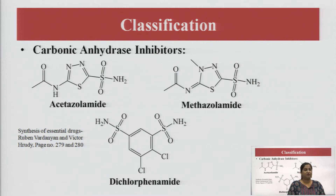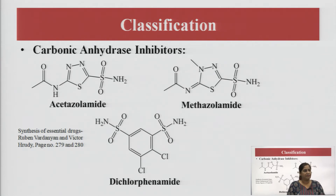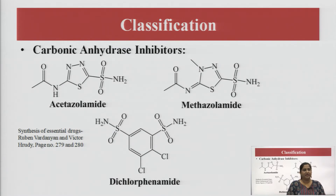Here comes the classification of diuretics. There are several classes. The first is carbonic anhydrase inhibitors. In this class we are going to study a few drugs: acetazolamide, methazolamide, and dichlorphenamide. These are the main drugs, and acetazolamide will be discussed in detail.